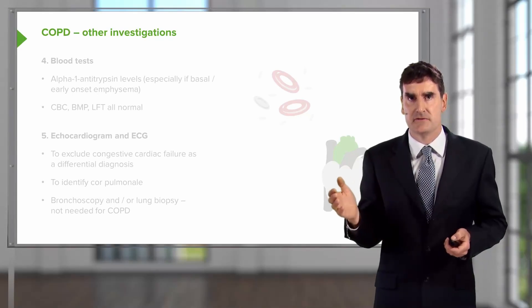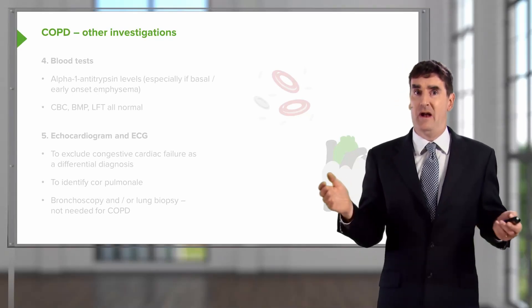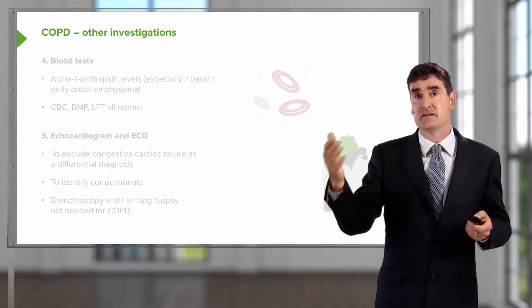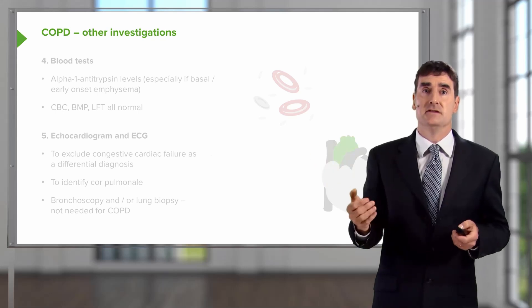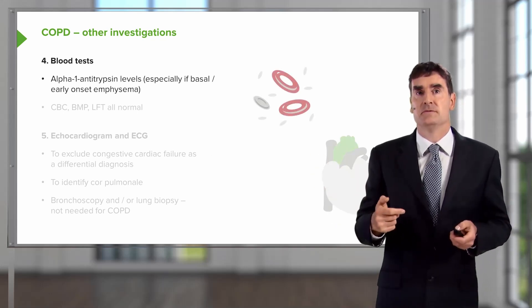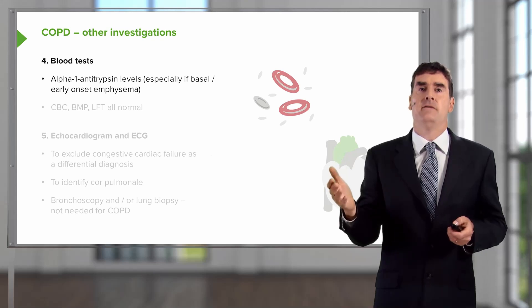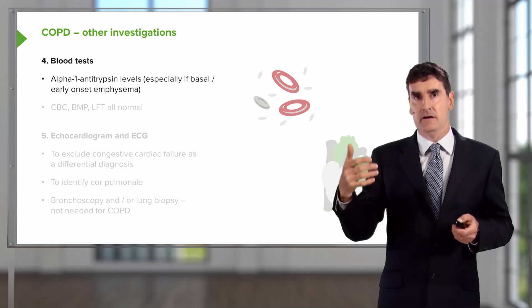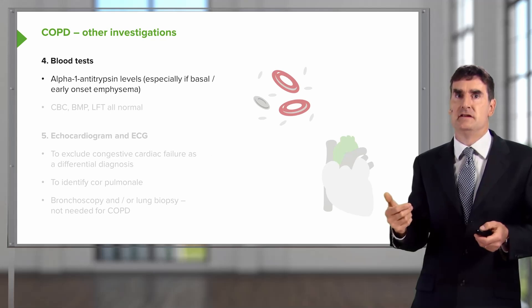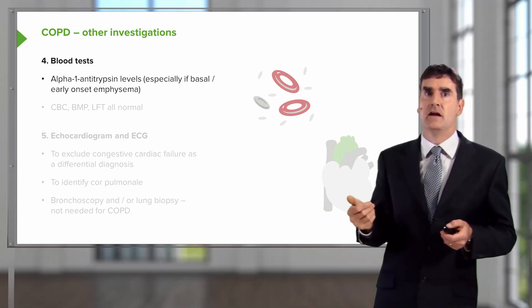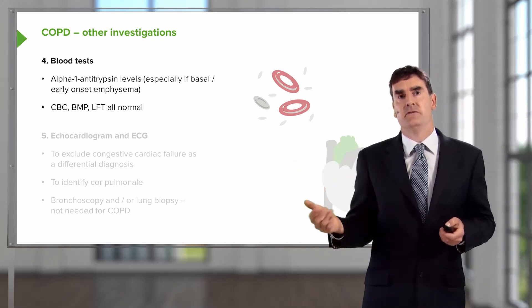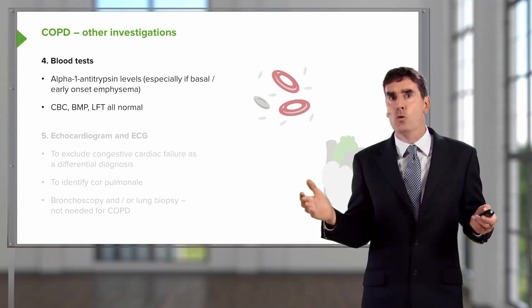What other investigations are useful in COPD? Actually not much — lung function, chest X-ray, and some patients need a CT scan. Blood tests: you may want to measure alpha-1-antitrypsin to see whether they have early-onset emphysema, particularly if they're relatively young patients, especially if they have basal emphysema on their CT scan. Normal blood tests for blood count, urine, and liver function tests are all normal.